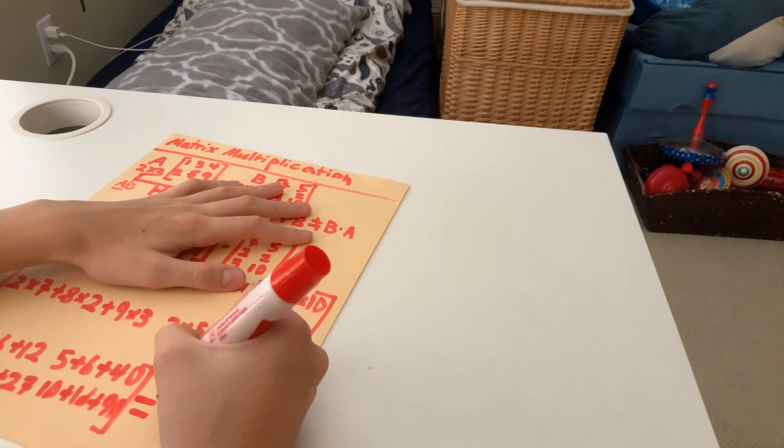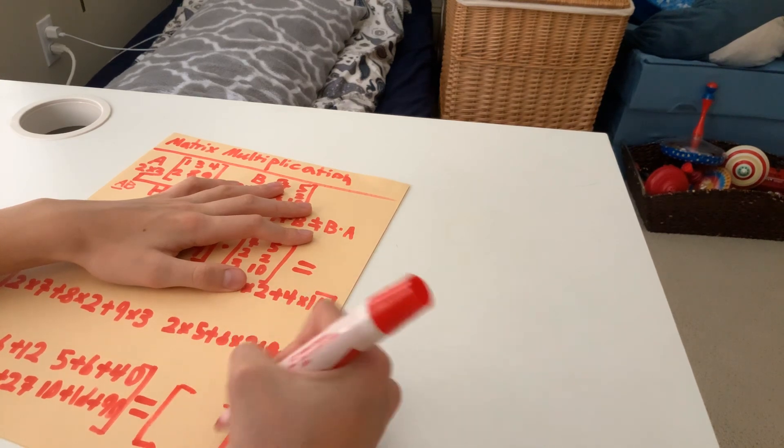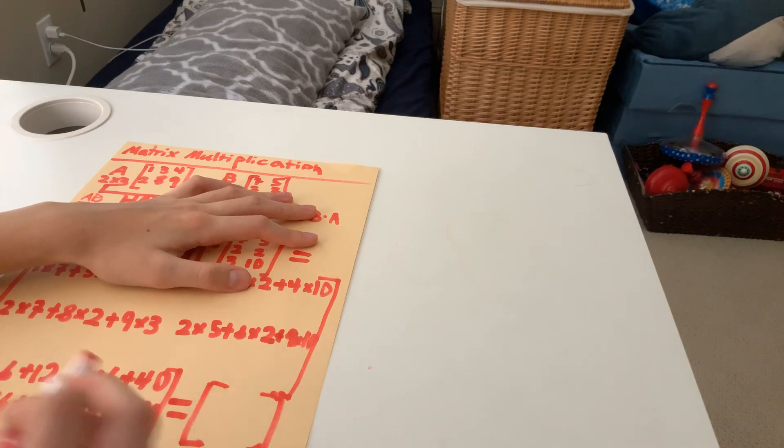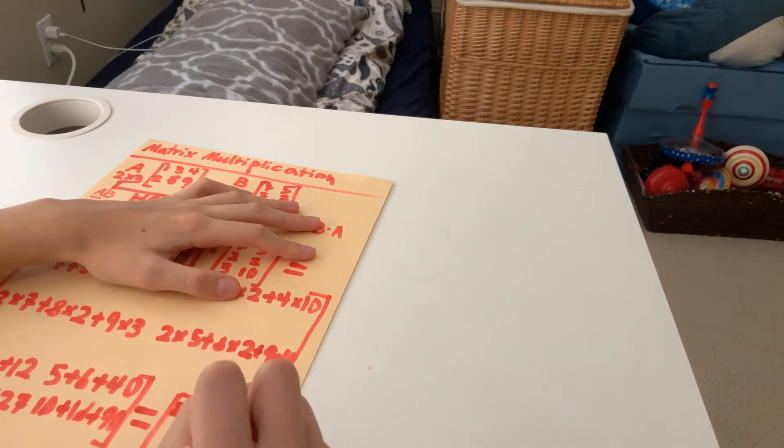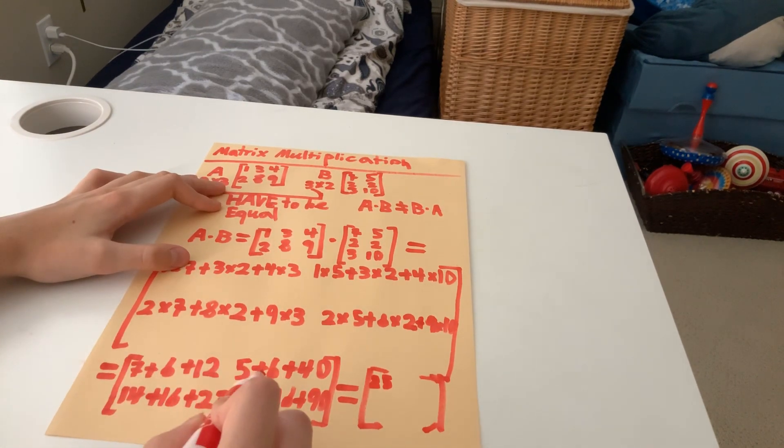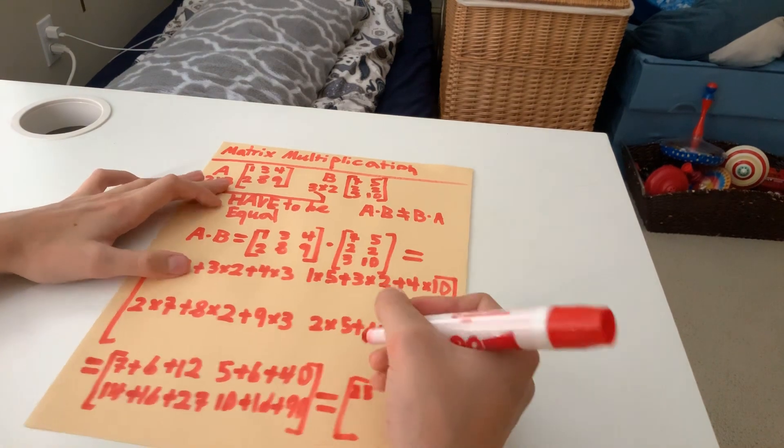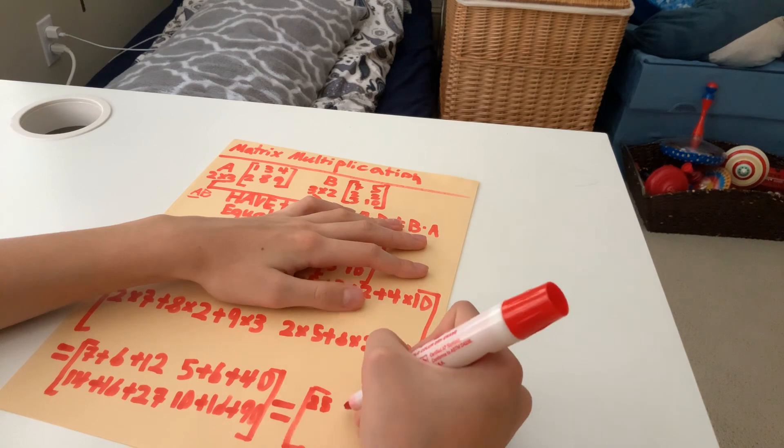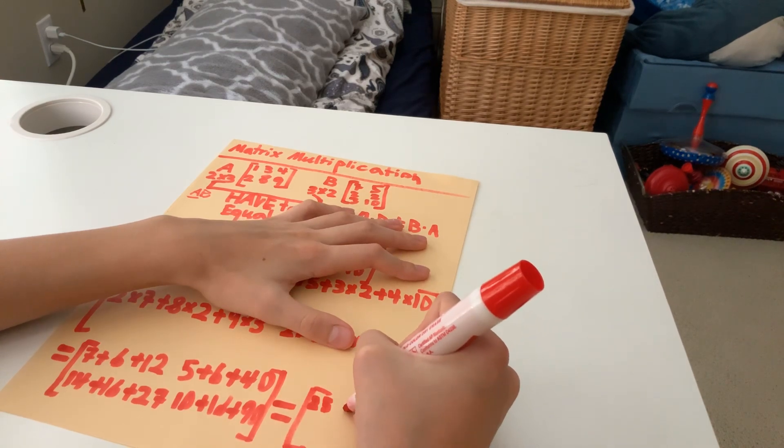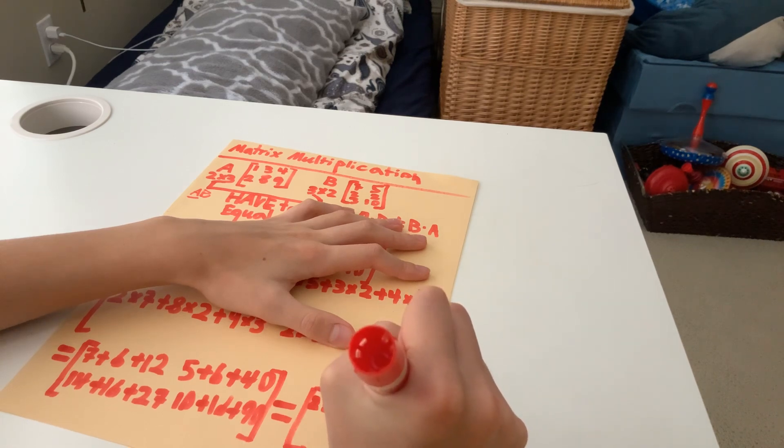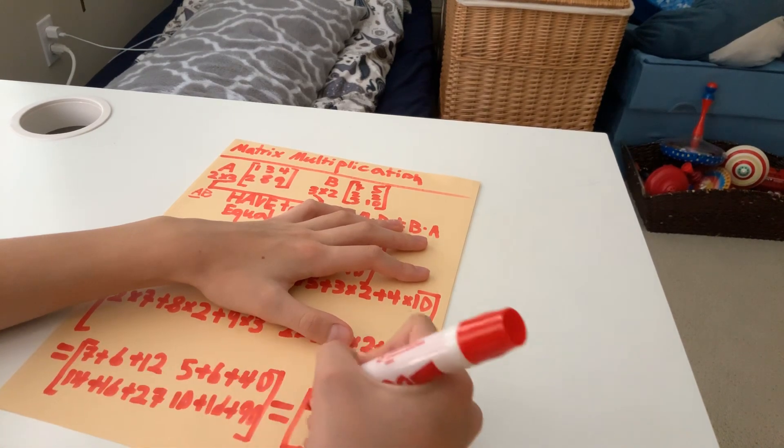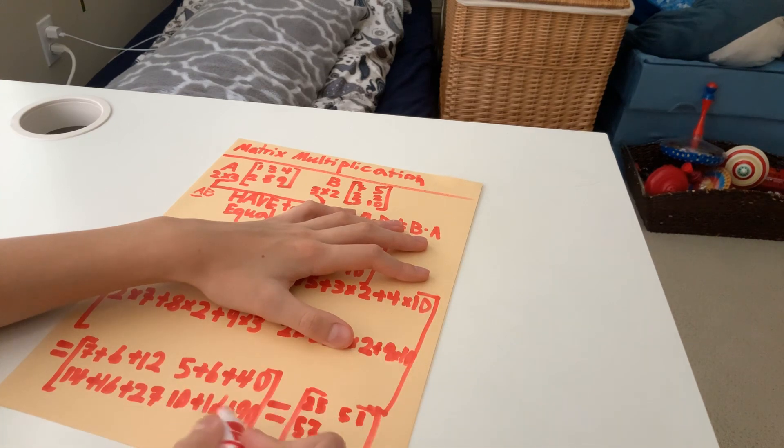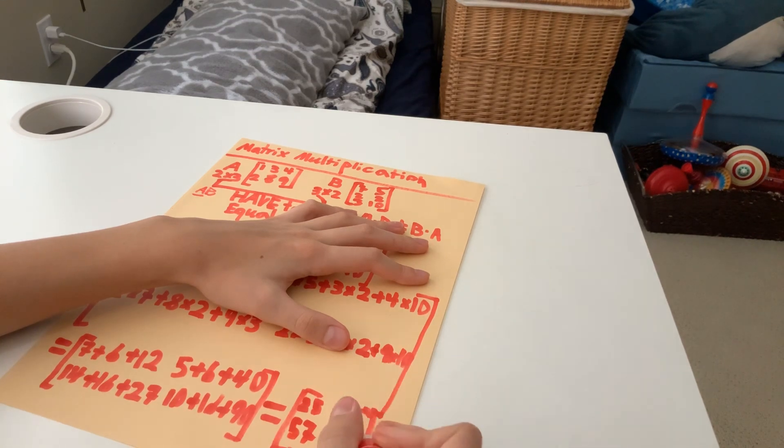So, let's add these up now. This is equal to. This will be rather small. Hopefully, that's enough room. 7 plus 6, 13. Plus 12, that's 25. Just like that. 5. 5 plus 6, plus 40. 5 plus 6 is 11. 11 plus 40 is 51. Right? Yep. Now, 14 plus 16. That is 30. Plus 27. That's 57. And finally, 10 plus 16. That is 26. Plus 90. That is 116. And that is our answer.